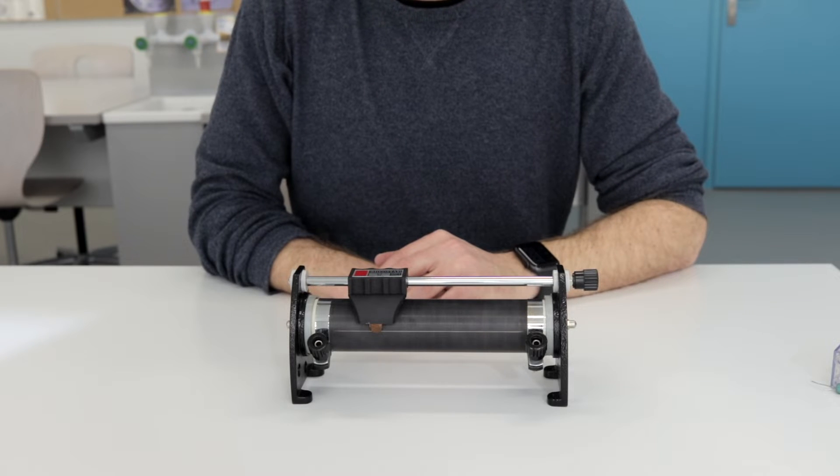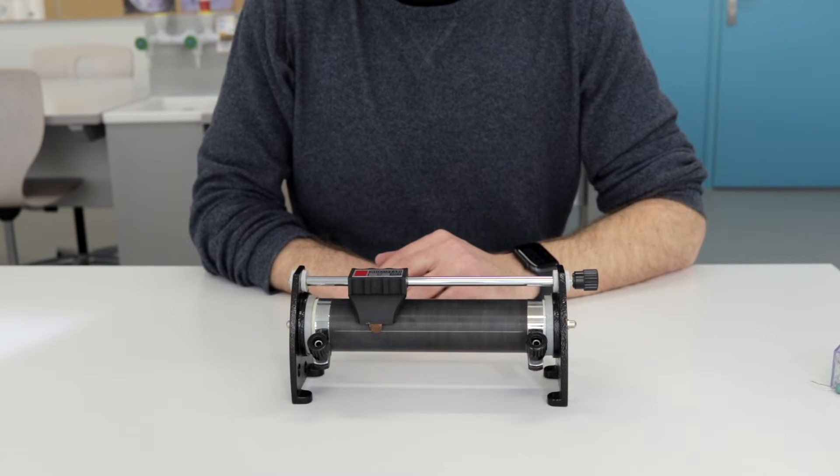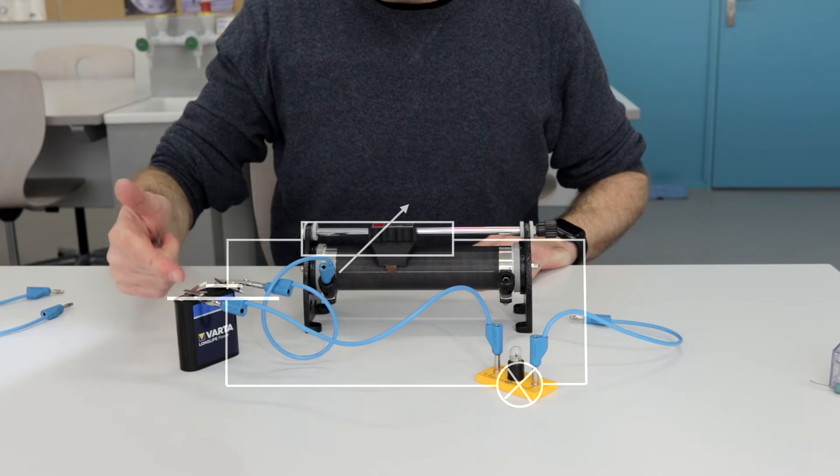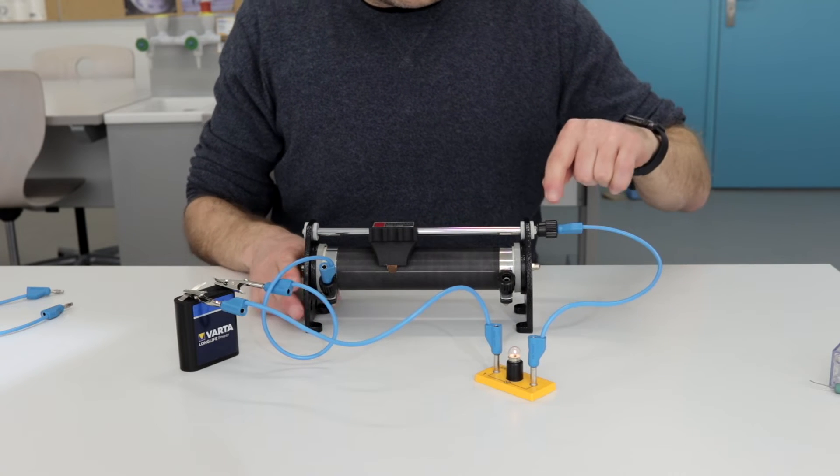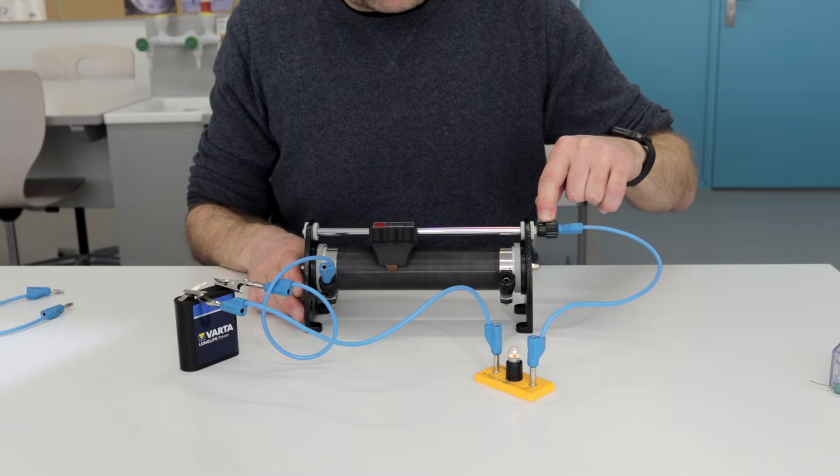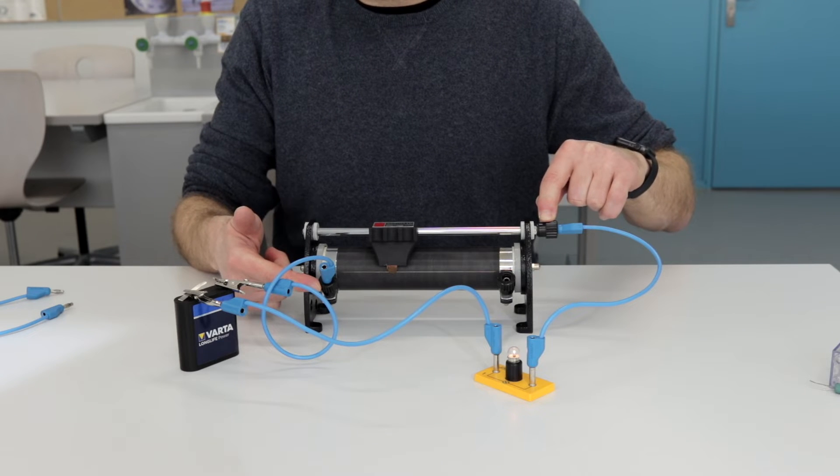To understand its workings a little better, let's connect it in a very simple circuit. The circuit consists of a battery, the variable resistor, and a light bulb. I'm going to connect one connection to the wiper, the other one to one end of the coil.